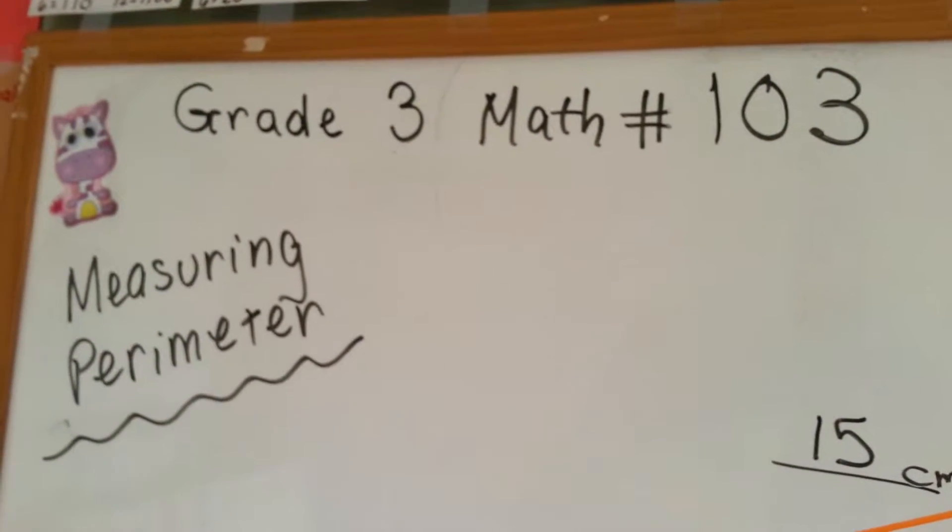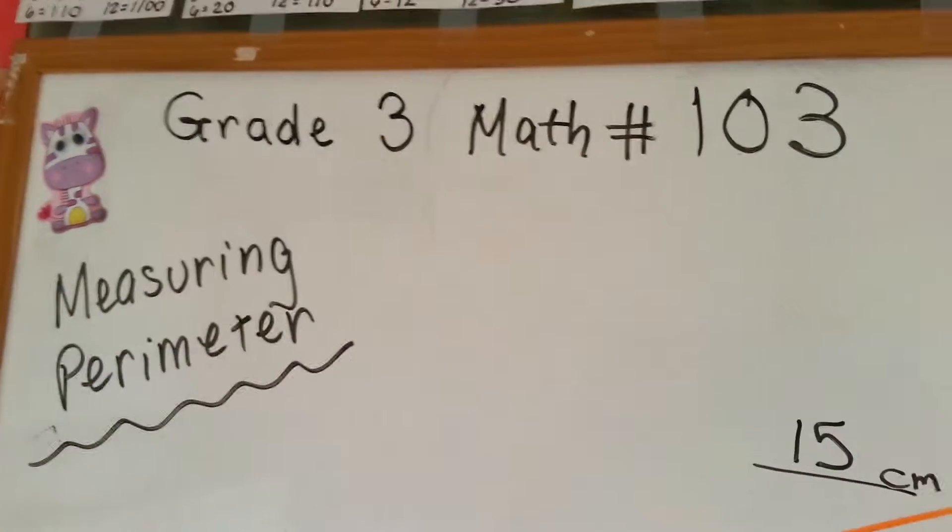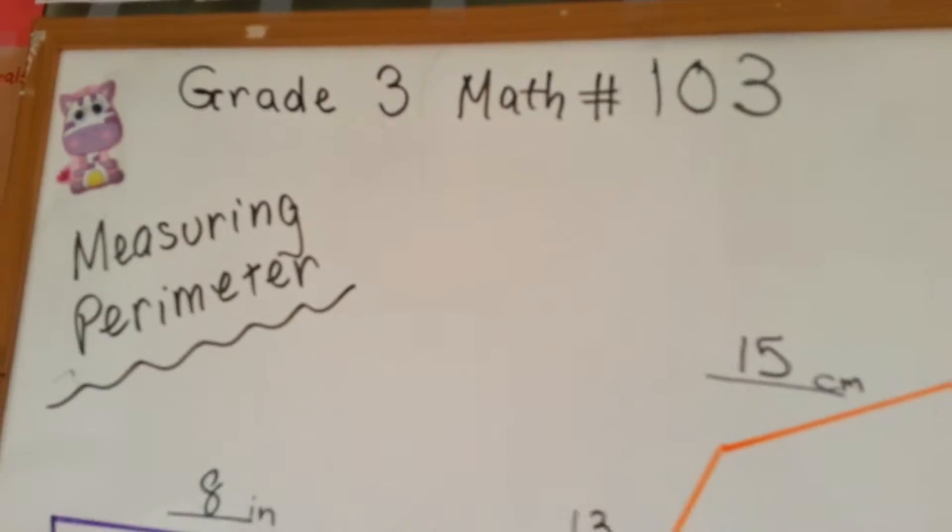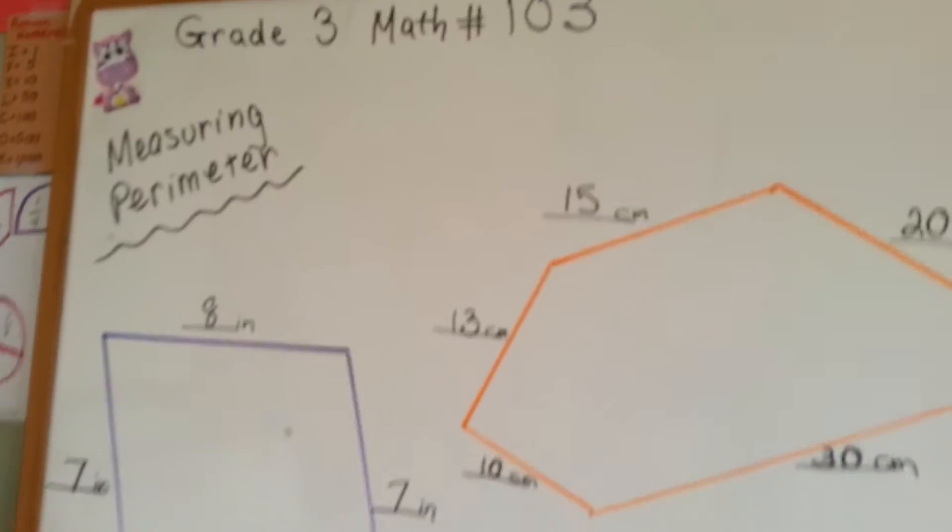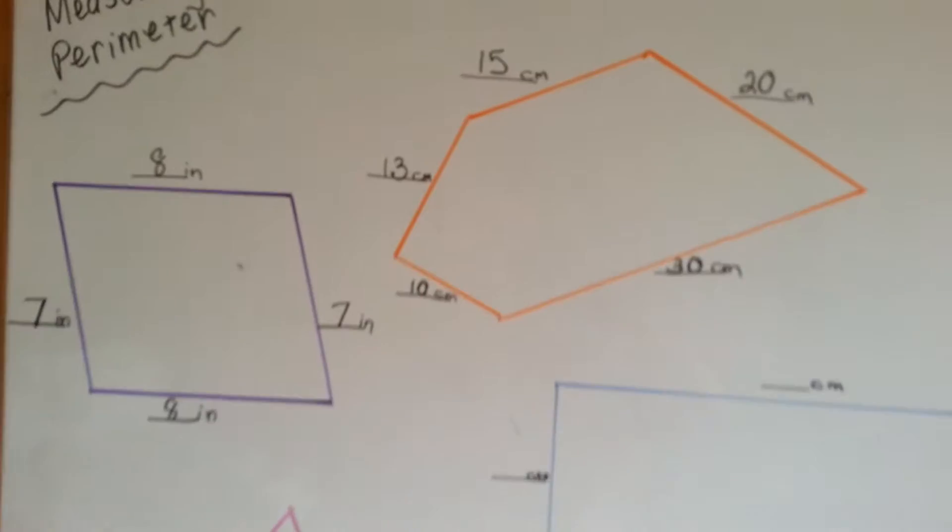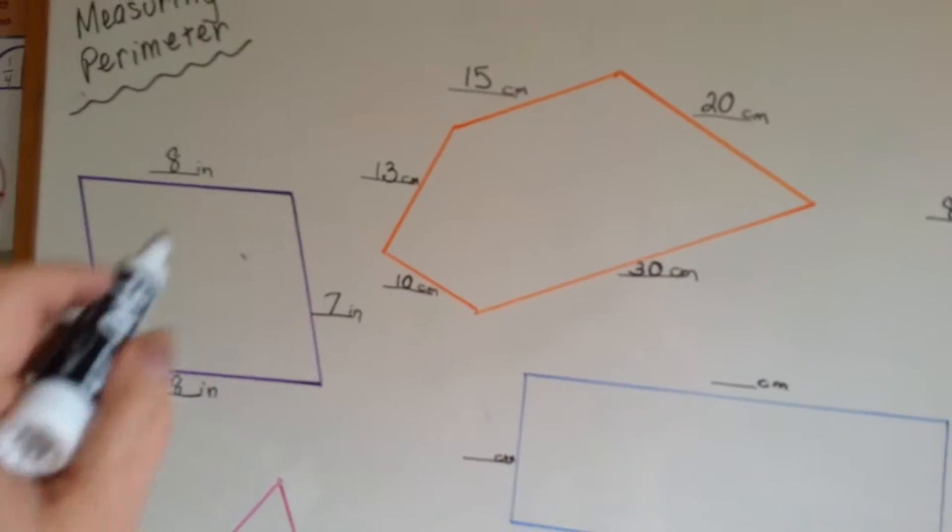Grade 3 Math number 103, Measuring Perimeter. We discussed perimeter in a previous video, so we're going to look at these shapes and see how the perimeters are measured on them.